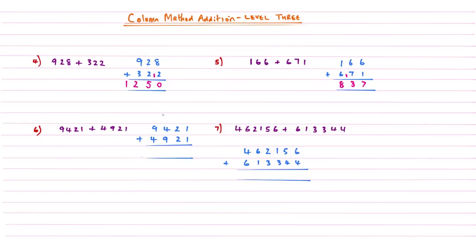Example number 6 — a number in the thousands. 1 add 1 is 2, that's fairly straightforward. 2 add 2 gives me 4. 4 add 9 gives me an answer of 13, so carry the 1 and write the 3 underneath. Then 9 add 4 is another 13, but remembering to add this 1, so that gives me an answer of 14.